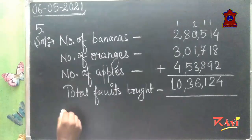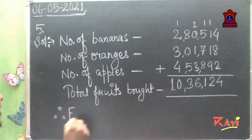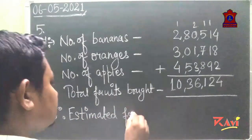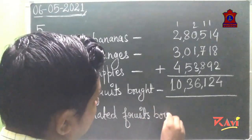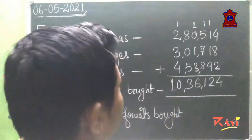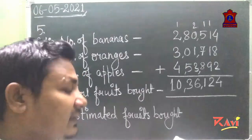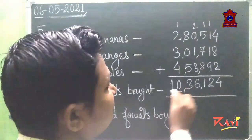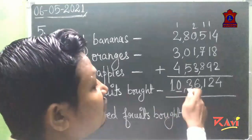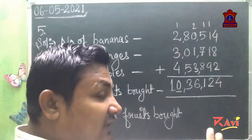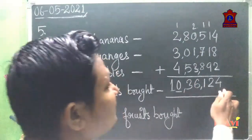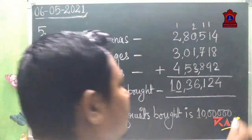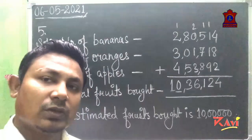Now we estimate the sum 10,36,124 to the nearest lakh. At the lakhs place we have 0, and before that — at the ten-lakhs — we look at what comes before. The digit before lakhs is 3, which is less than five, so all remaining digits become zero and nothing is added. Therefore the estimated total is 10,00,000 — ten lakh fruits.